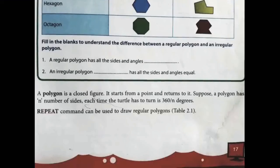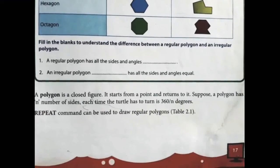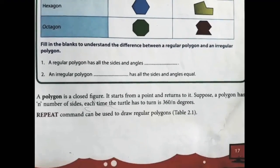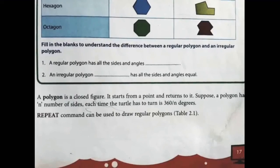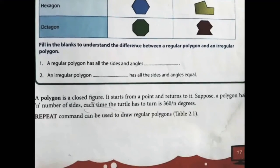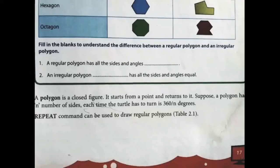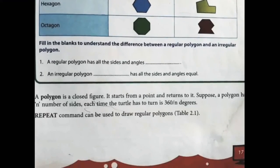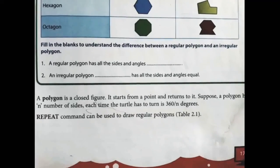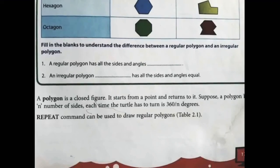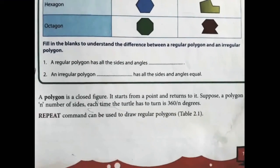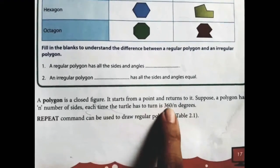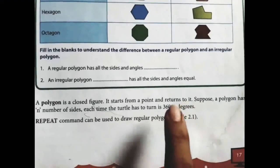A polygon is a closed figure — it starts from a point and returns to it. Suppose the polygon has n number of sides; each time the turtle has to turn 360 divided by n degrees. Remember, this will be the formula for all cases: 360 divided by n. So if you have to draw a square, then n equals 4 and the turtle turns 360 divided by 4. In case of a pentagon, it is 360 divided by 5.